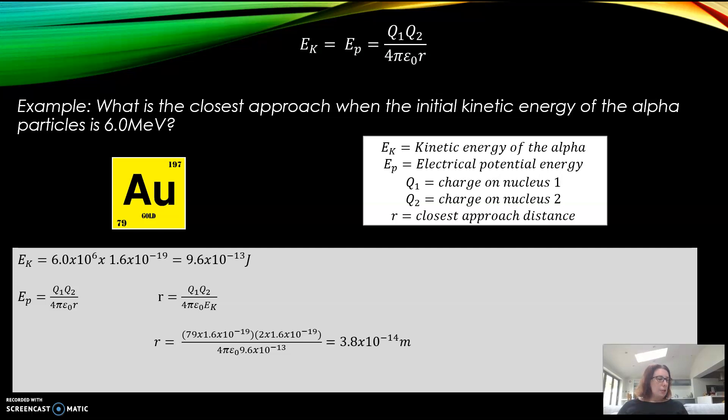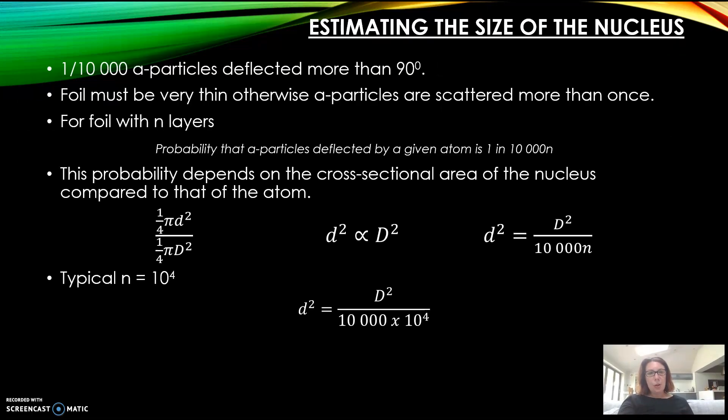Now I've set you some questions to do - there are four questions on page 26.1. The last one, 4c, is the closest approach method so you need to use this method - it's gold, it's just that it's changed the kinetic energy. In question 4b it's asking you to do the probability method so it wants you to use this equation here.